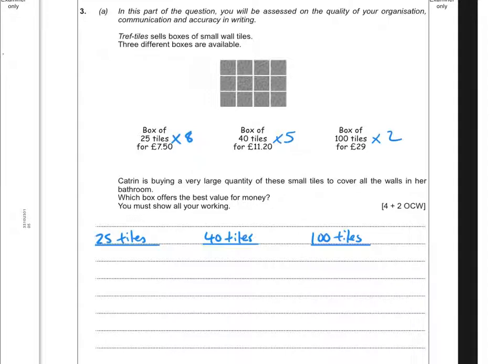So £7.50 times 8, that would give us an answer of £60. For 40 tiles, £11.20 times 5 - a mental trick for this is to times it by 10 and then half it - so that would be £56. And for 100 tiles, doubling £29 would be £58.